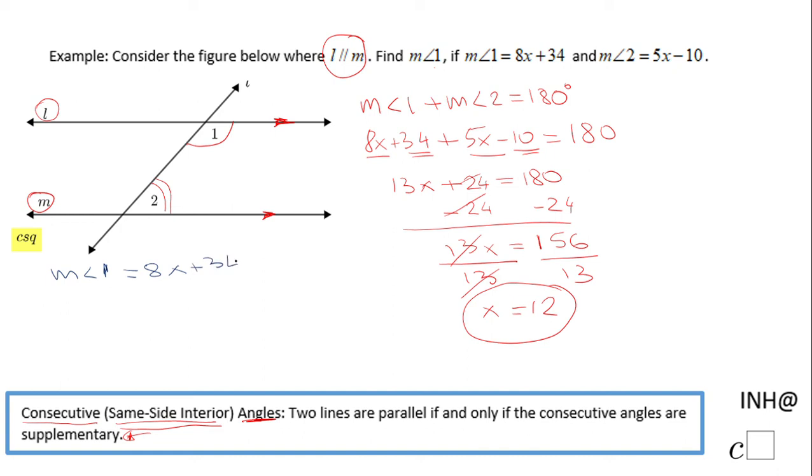So we're going to have 8 times 12 plus 34. We're going to end up with 8 times 12, that is 96, plus 34, that will be 130 degrees. The measure of angle 1 is 130 degrees, this angle here.